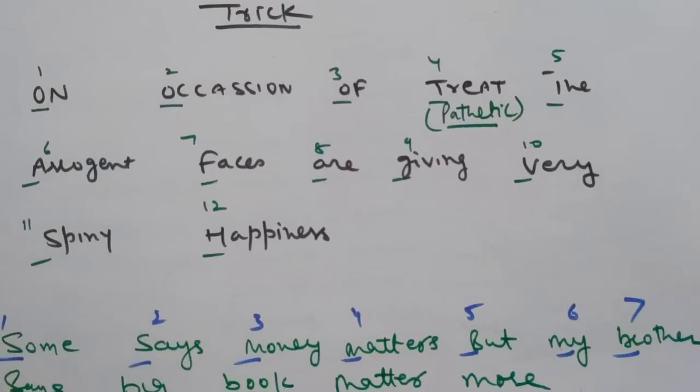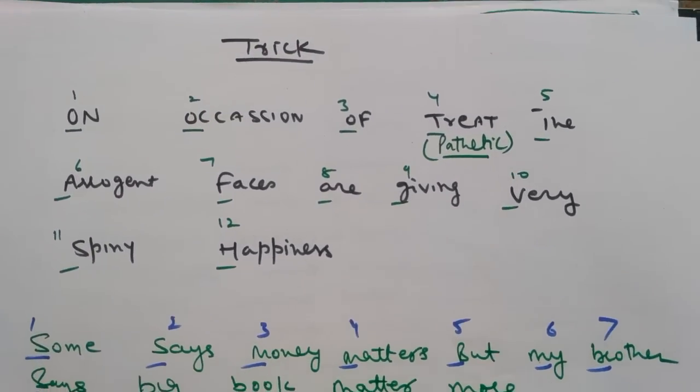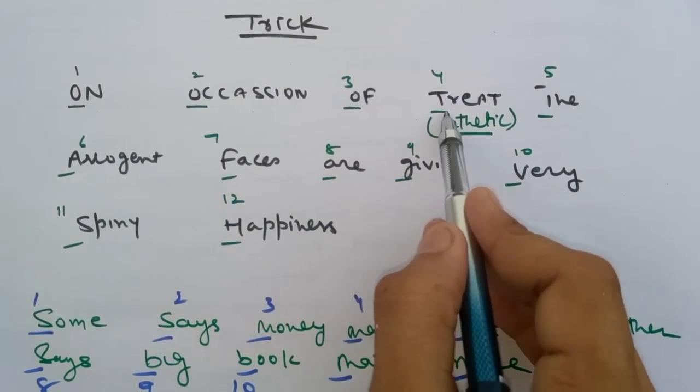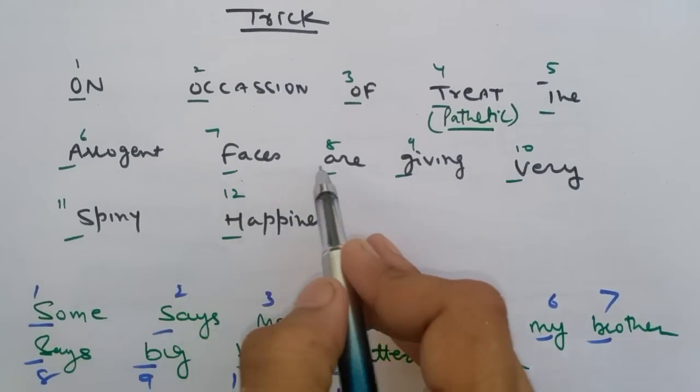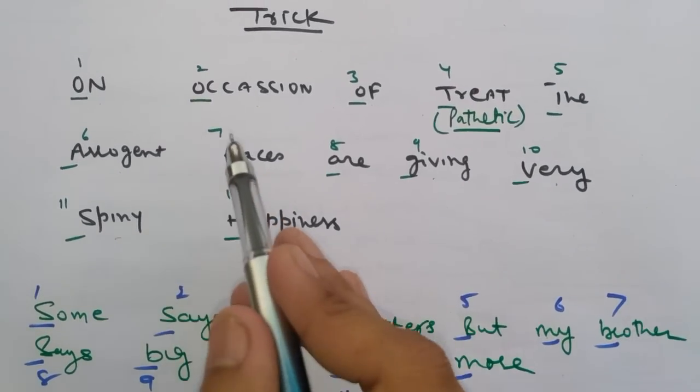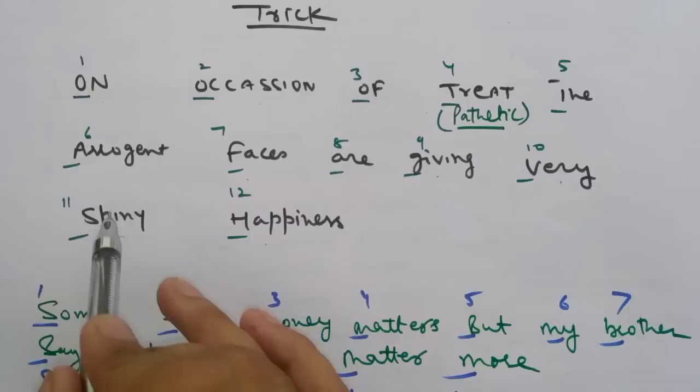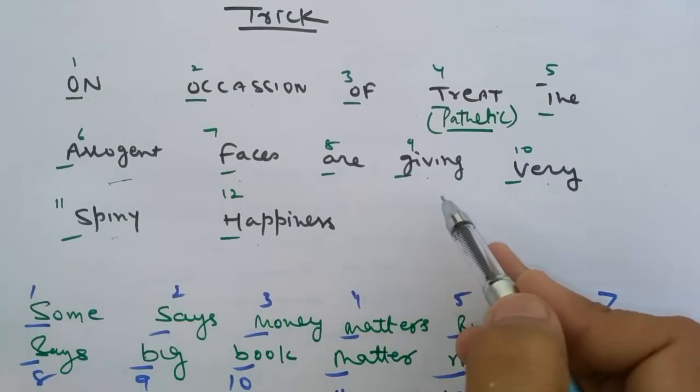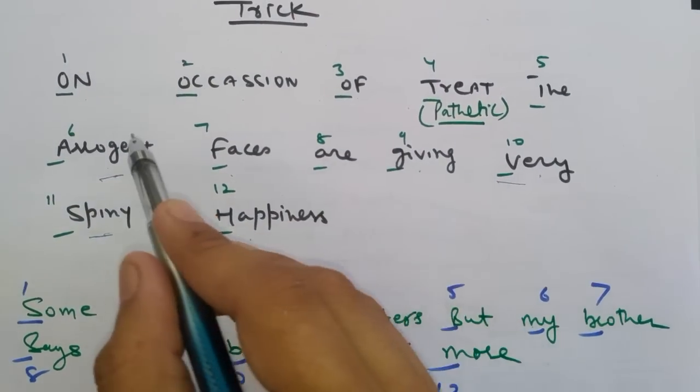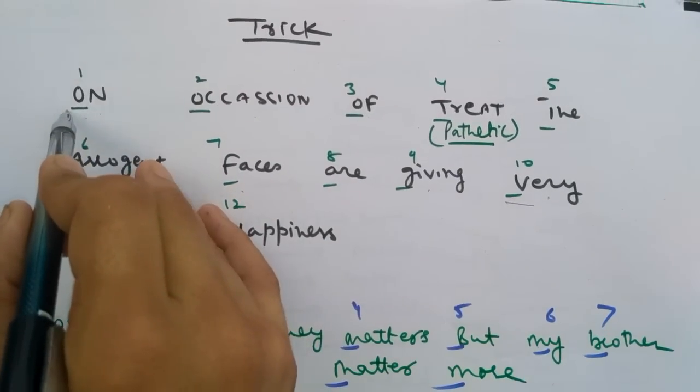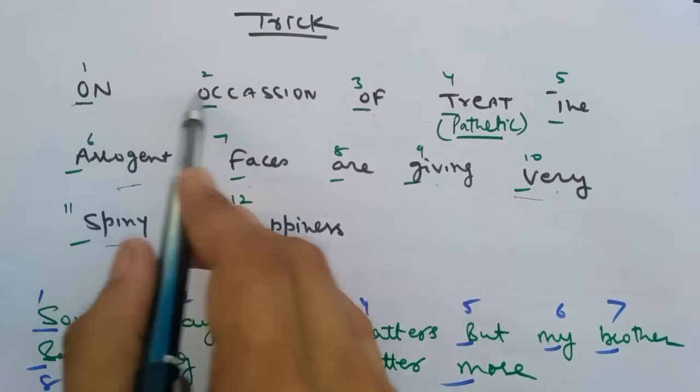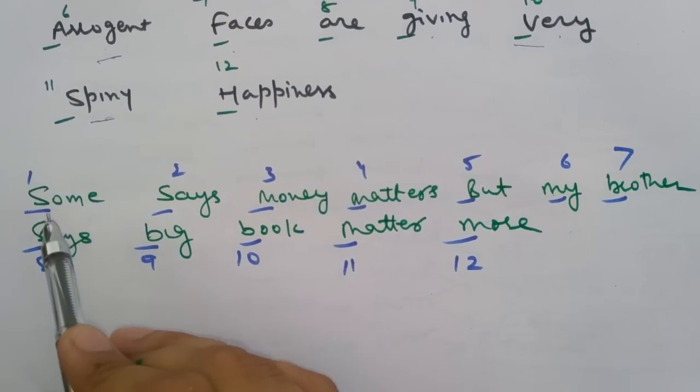Now I will tell you about some tricks which will be helpful for you to easily remember in serial order the cranial nerves. Here is a trick in the form of a sentence you can easily remember: On Occasion Of Treat The Arrogant Faces Are Giving Very Spiny Happiness. It means in any occasion or function, some people are arrogant and their smile is not a true smile, that is spiny, false type. So you can easily remember this.